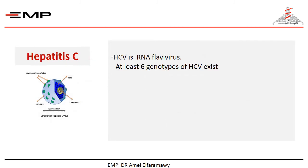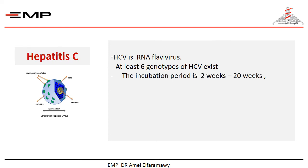Hepatitis C is an RNA virus. At least 6 genotypes of hepatitis C exist, and Egypt has a very high prevalence rate with exclusive genotype 4. The incubation period is between 2 weeks to 20 weeks.